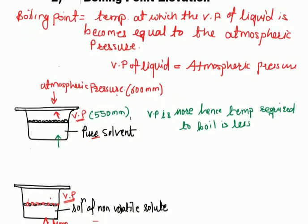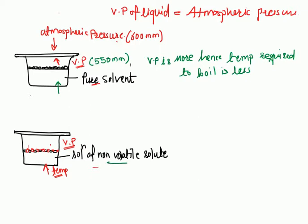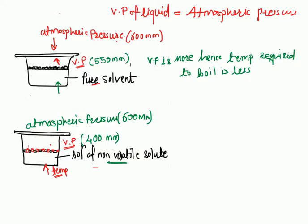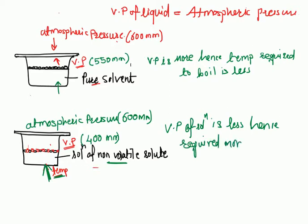But as we have already seen, the lowering of vapor pressure occurs due to the addition of non-volatile solute. Consider that the vapor pressure of the solution is now 400 mmHg, while the atmospheric pressure remains 600 mmHg. So we have to supply more and more temperature to make the vapor pressure equal to 600 mmHg. The vapor pressure of the solution is less, hence more temperature is required to boil the solution.